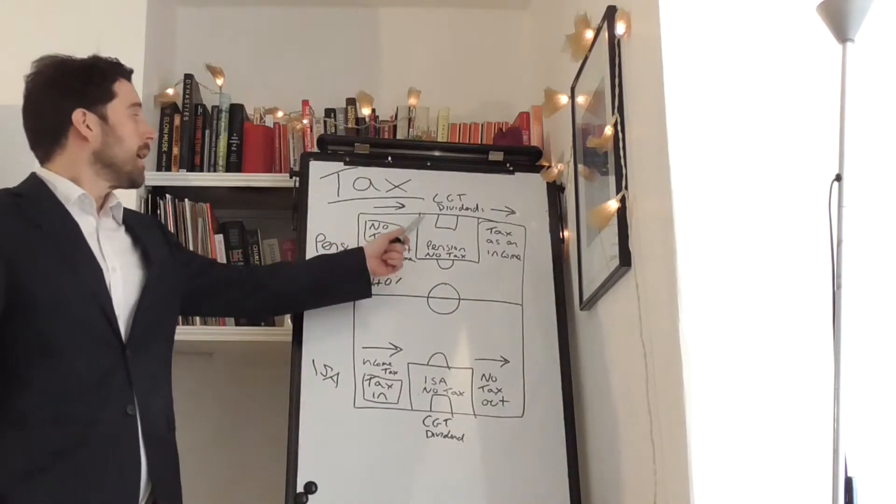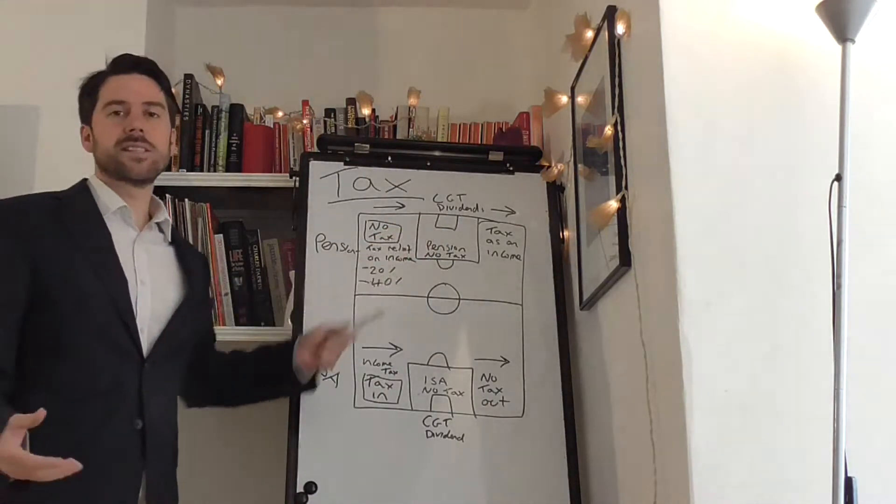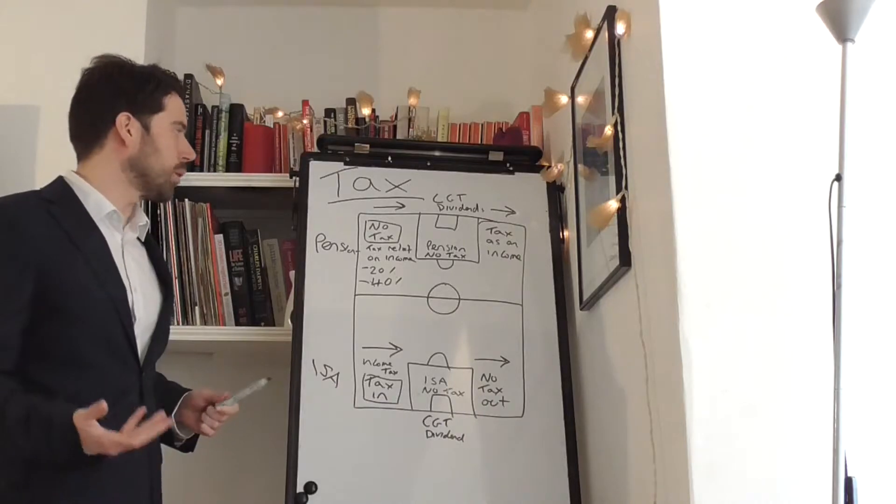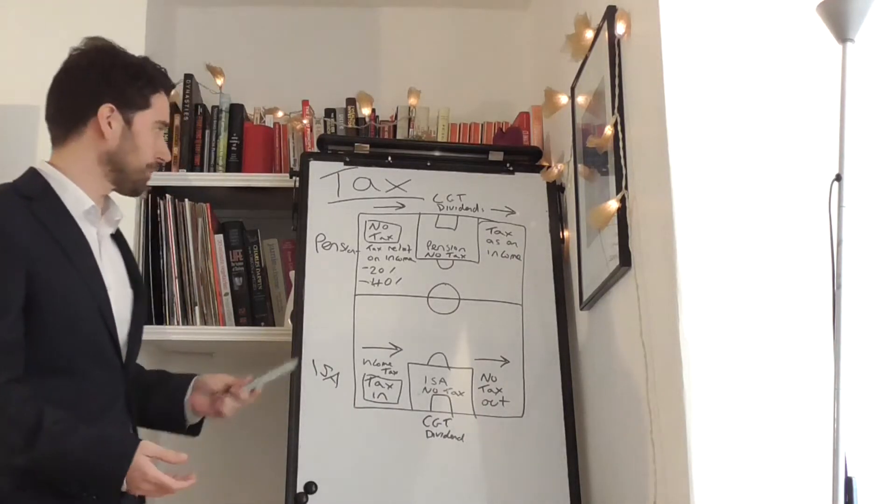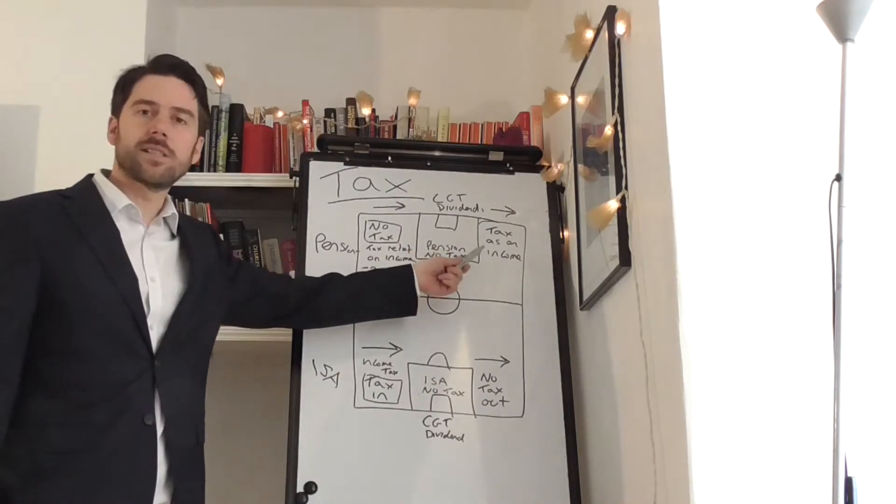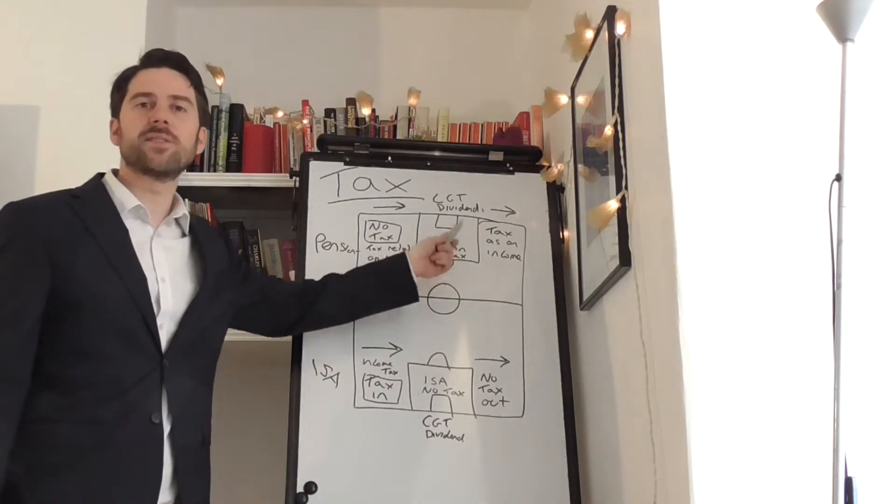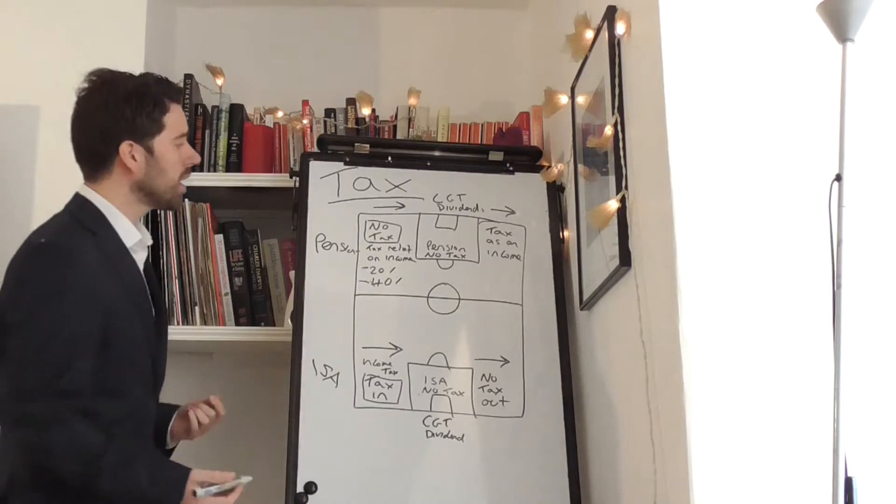It's exactly the same in this box. The tax wrapper also has no capital gains tax and no dividend tax. The downside to the pension is it's taxed on the way out.